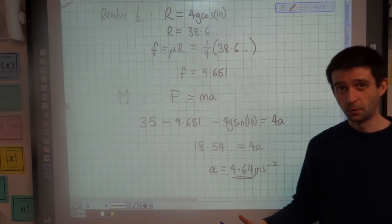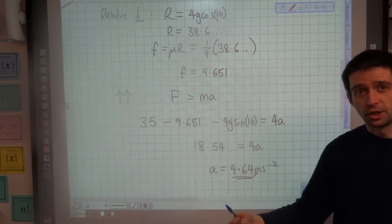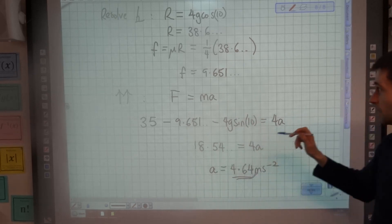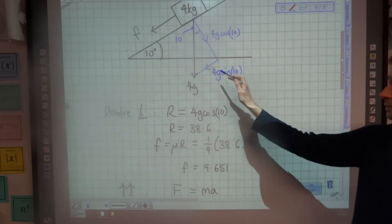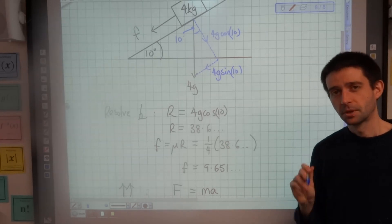So pretty much same as before: resolve perpendicular to find the reaction, use that to find friction, resolve parallel to find the acceleration, and do not forget the weight component down the slope. People do it, don't be one of them. So thanks for watching.